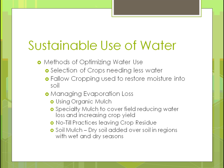No-till practices also help because you're not opening up the soil so it dries out. Leaving crop residue acts similarly to organic mulch — it's just not as tidy looking — and helps keep soil moisture. Soil mulching, where dry soil is added over existing soil in regions with wet and dry seasons, adds more coverage so that already-damp soil deeper down is less likely to dry out.